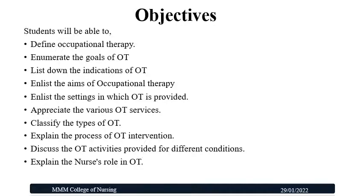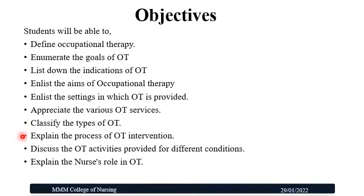The objectives are: students will be able to define occupational therapy, enumerate the goals of occupational therapy, list down the indications of occupational therapy, enlist the aims of occupational therapy, enlist the settings in which occupational therapy is provided, appreciate the various occupational therapy services, classify the types of occupational therapy, explain the process of occupational therapy intervention, discuss the occupational therapy activities provided for different conditions, and explain the nurse's role in occupational therapy.